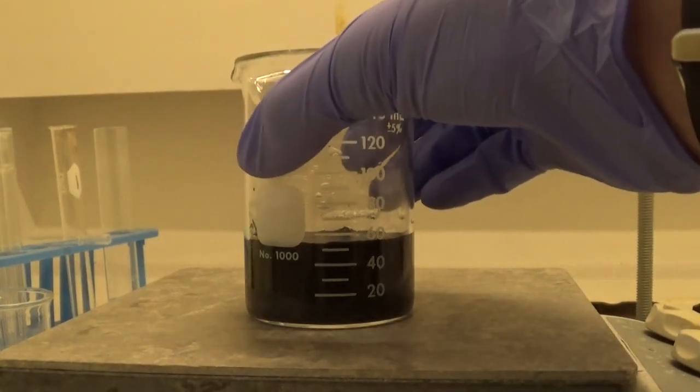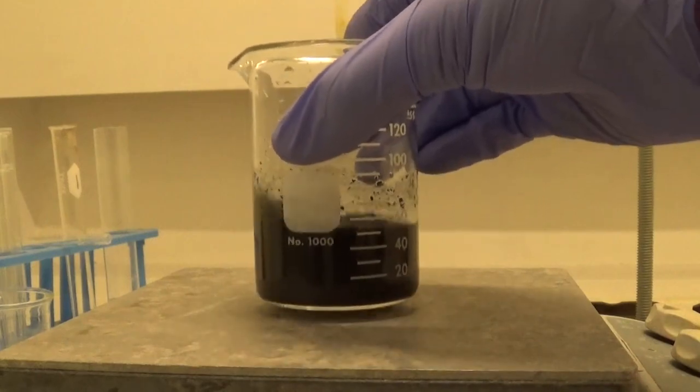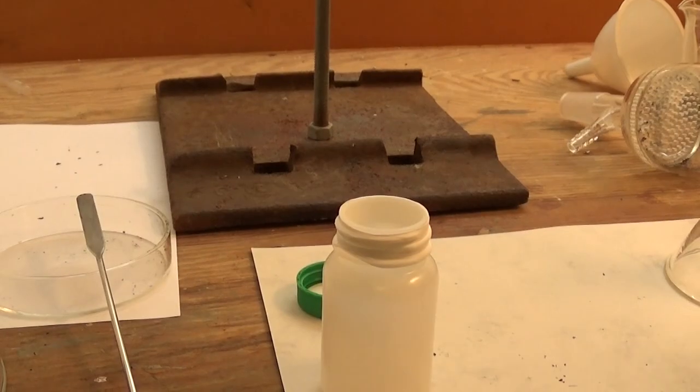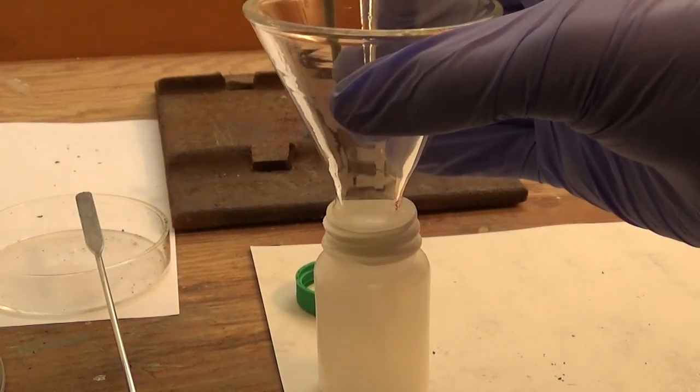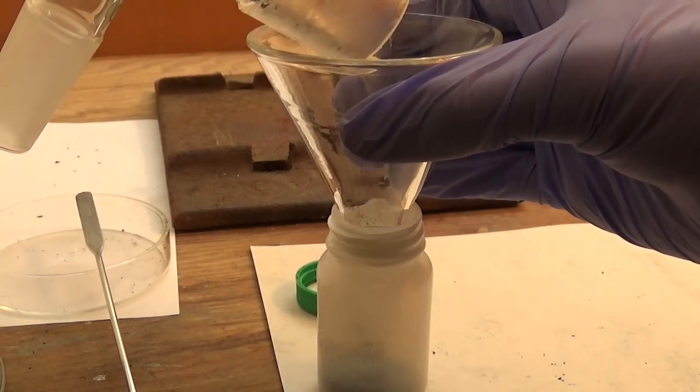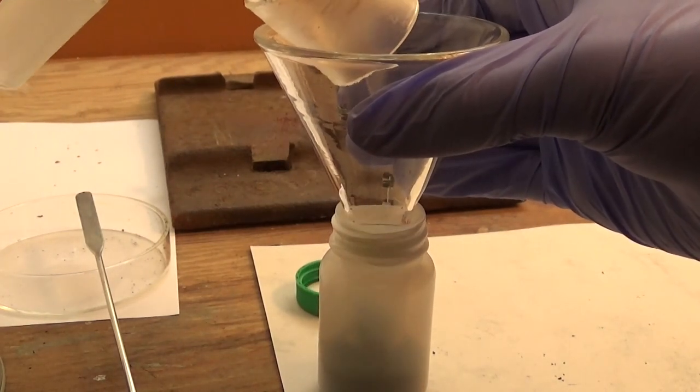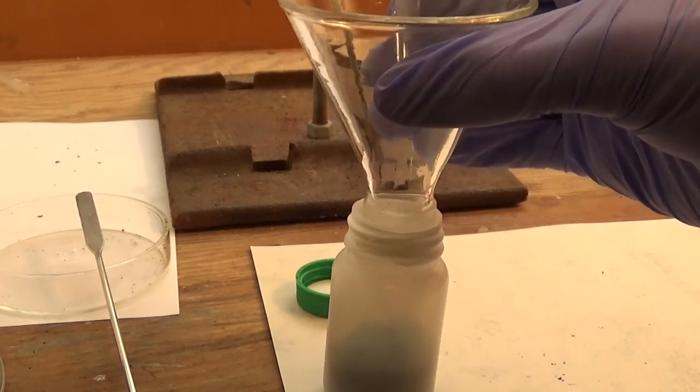The palladium on carbon was filtered off, not using a glass frit because that would become clogged with carbon particles. It was washed several times with water. The palladium on carbon was then allowed to dry in the air for a little while, and when it was mostly dry, it was transferred into my drying pistol, which I was really using as a vacuum desiccator, and it was allowed to dry over some calcium chloride for around a day.